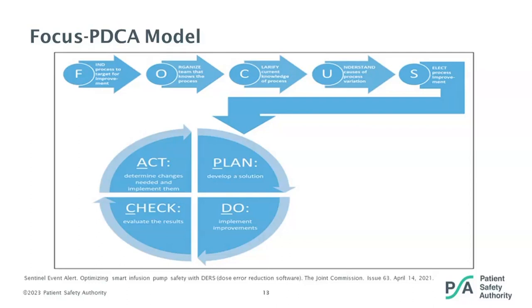Now you're ready to enter the PDCA cycle, with step seven being key: plan your intervention. Next, do — carry out or implement that solution — followed by check to follow up on data collection and feedback. And finally, act to take the necessary steps to maintain that improvement, adjusting course or modifying as needed. You'll also want to consider sharing your information externally with other organizations.